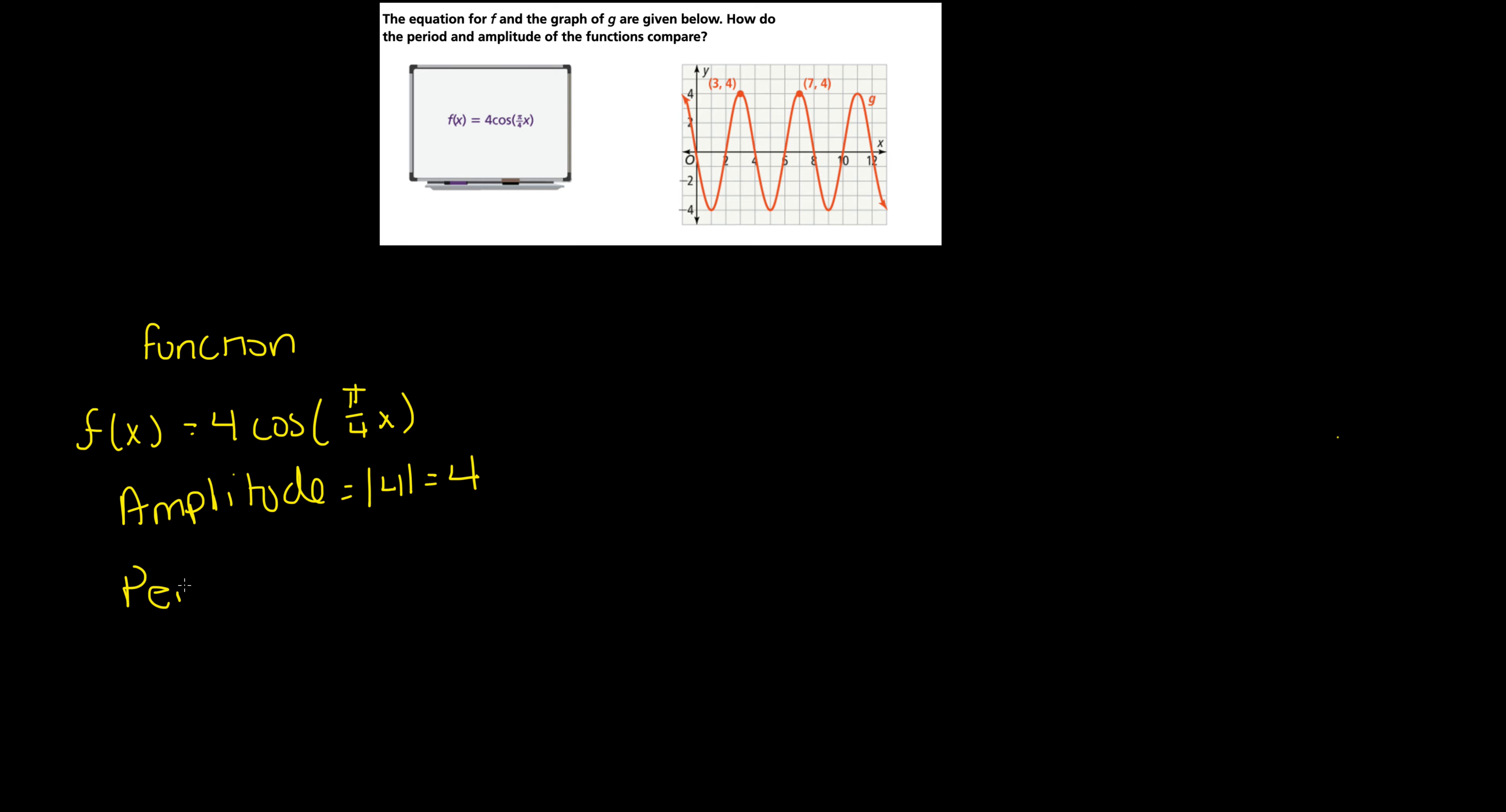My period is going to equal 2π/b, which is π/4. This is going to be just 8, because if π's cancel out, then you have 2 times 4, which is 8. Okay, so we have the period and the amplitude here. Now let's look at the graph.